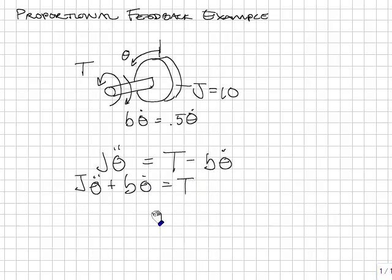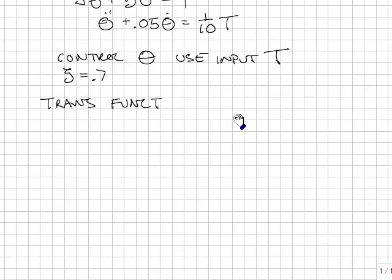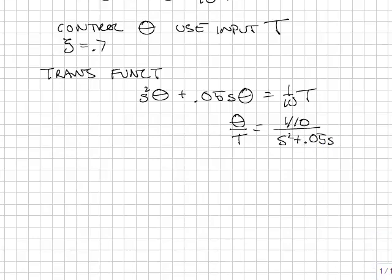Substituting in the values, we have theta double dot plus 0.05 theta dot is equal to one-tenth T. I can also write the model as a transfer function. That is S squared theta plus 0.05 S theta is equal to one-tenth T, so theta over T is equal to one-tenth over S squared plus 0.05 S.